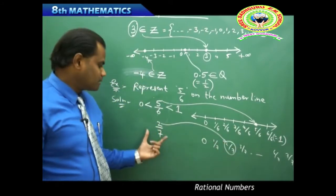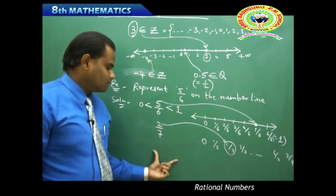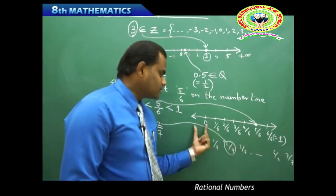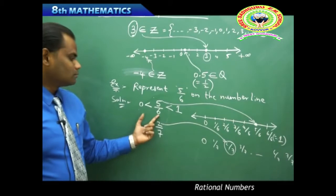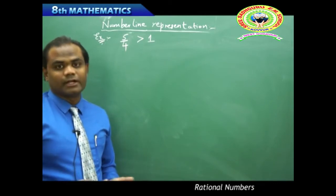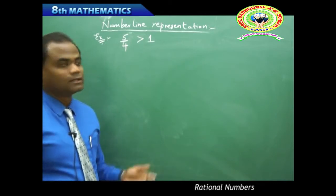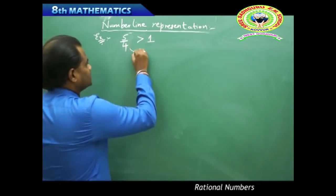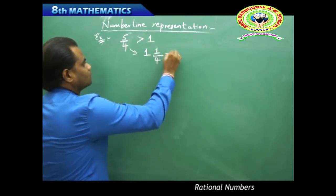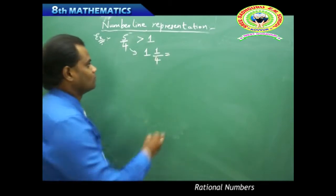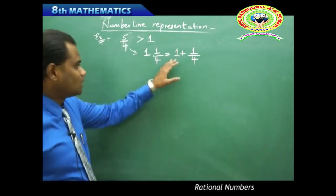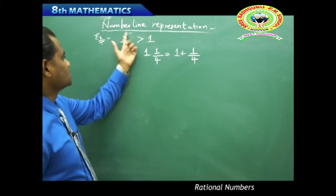This is how number line representation is done for rational numbers — it is very important to consider what fractions you use between 0 and 1. Now let's take a rational number greater than 1, such as 5/4. Since 5/4 is greater than 1, I convert it to mixed fraction form: 5/4 = 1 and 1/4, which is 1 plus 1/4.